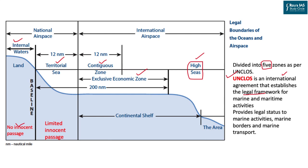UNCLOS is an international agreement — a convention signed by UN members to which India is also a party. This convention sets up a legal framework for marine and maritime activities, which may include exploration of the seabed, extraction of mineral resources, movement of commercial and security-related ships, and movement of private individuals on the water and even the air above it. It provides legal status to marine activities, marine borders, and marine transportation.